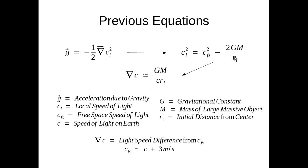G is the gravitational constant, M is the mass, RI is the distance from the center of the mass, and CL is the local speed of light.